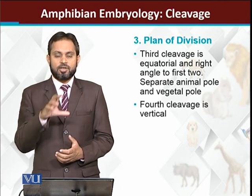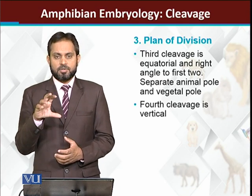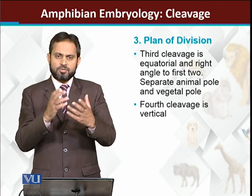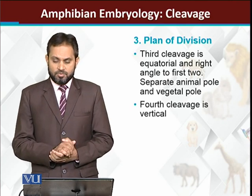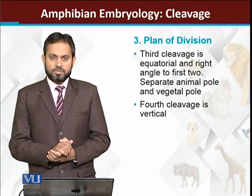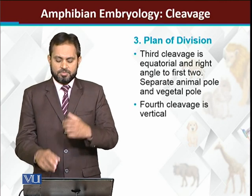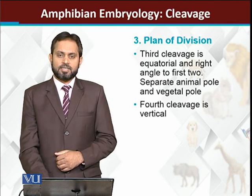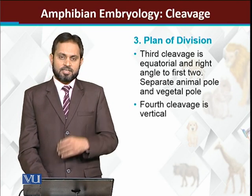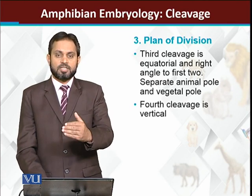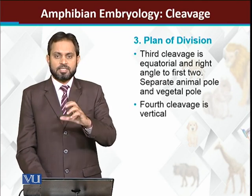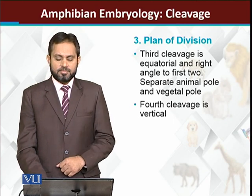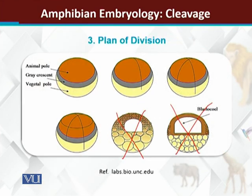The fifth cleavage is again horizontal, leading to the 32-cell stage. After this, cell division becomes rapid and a specific cleavage pattern is no longer maintained. The third, fourth, and fifth cleavages follow a specific pattern, but beyond that the divisions become less regular.